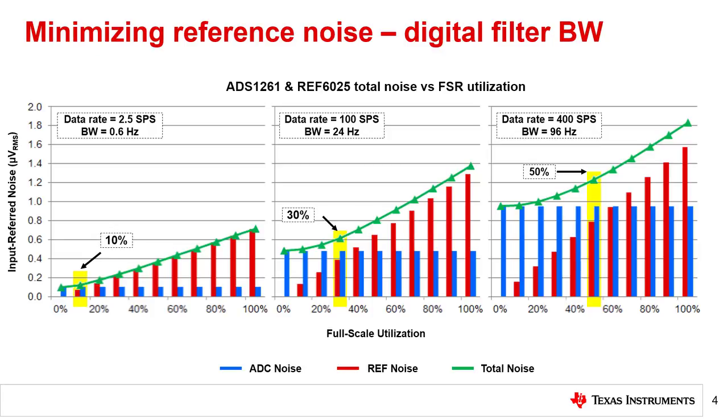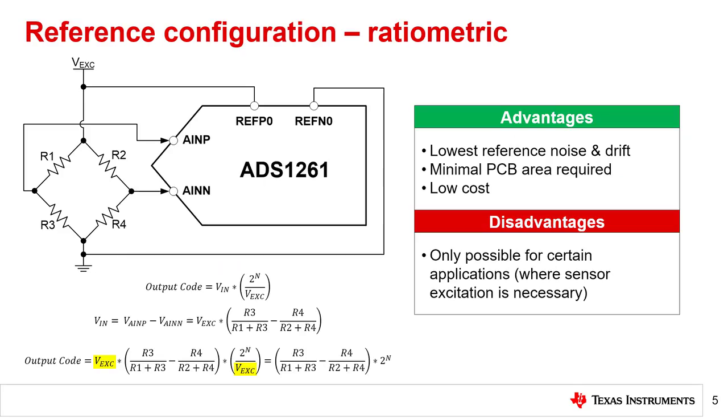In these instances, you can also reduce the amount of reference noise passing into the system by choosing an appropriate reference configuration including ratiometric, internal, or external.